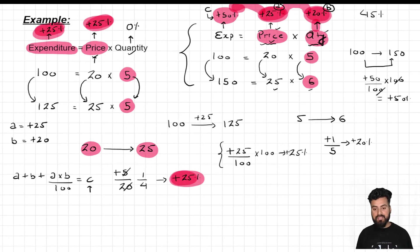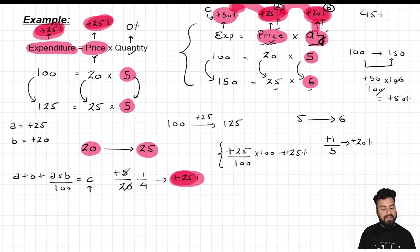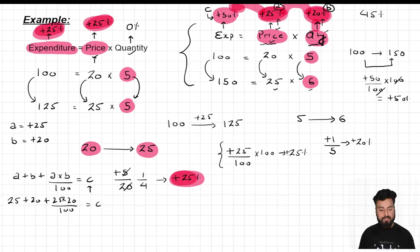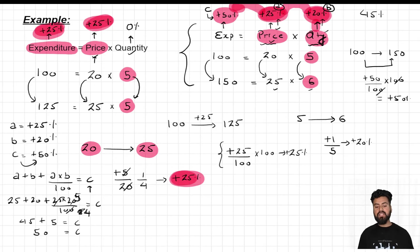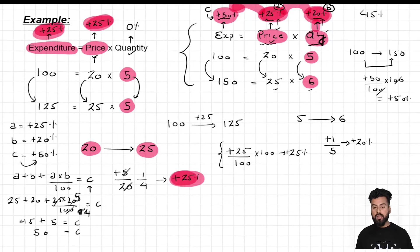We are trying to find out the change in expenditure if price and quantity are increased by 25% and 20% respectively. Plugging in the values: +25 + 20 + (25 × 20)/100 = C. 25 + 20 = 45, and 25 × 20 / 100 = 5. So 45 + 5 = 50. Since everything was in terms of percentage, the final change C is an increase of 50%. Expenditure is increased by 50%.